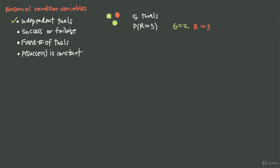What about success or failure? We need to classify each trial's outcome as a success or a failure. Since we're interested in the probability of getting red three times, let's call getting red a success and getting green a failure. Keep in mind that success and failure doesn't mean good and bad — it just means red is what we're looking for and green is what we're not. So we meet that criterion as well.